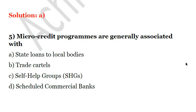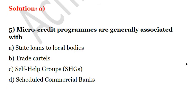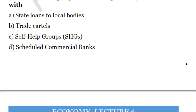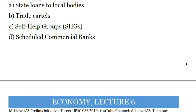Next question: microcredit programs are generally associated with? A. State loans to local bodies. B. Trade cartels. C. Self-help groups. D. Scheduled commercial banks. Microcredit programs are basically associated with self-help groups. This is also quite an easy question. The answer is C.